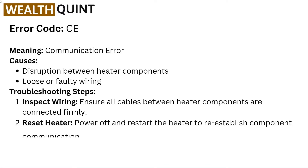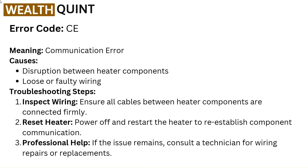Error code CE — meaning Communication Error. Causes: disruption between heater components, loose or faulty wiring. Troubleshooting steps: Inspect wiring — ensure all cables between heater components are connected firmly. Reset heater — power off and restart the heater to reestablish component communication. Professional help — if the issue remains, consult a technician for wiring repairs or replacements.